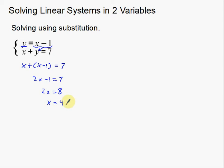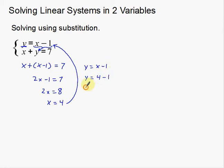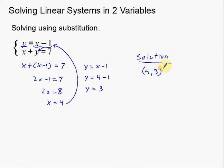Now I'm going to take x equals 4 and plug it back into my first equation — the one I used for substitution. So y equals x minus 1 becomes y equals 4 minus 1, therefore y equals 3. I can very quickly solve for the other variable. My solution — I usually write it as coordinates — is (4, 3).